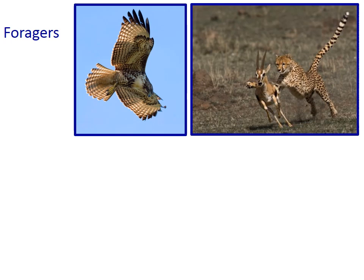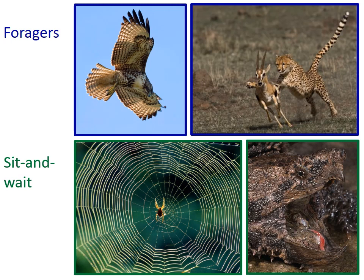Predation can be difficult when prey don't stay in one place. If prey are moving, a predator can employ one of two basic foraging strategies. Some predators, such as this red-tailed hawk or this cheetah, are quite mobile, moving throughout their habitat in search of prey. In other cases, the predator will remain in place and wait until prey is within striking distance or enters a trap.